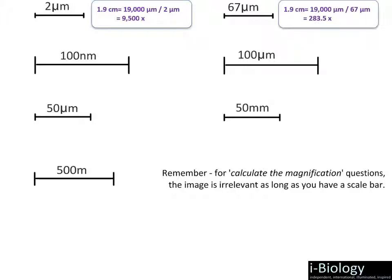The next example has the same line but a different scale bar value. We have 19,000 micrometers, and if we divide that by the actual of 67 micrometers, we get approximately 283.5 magnification.